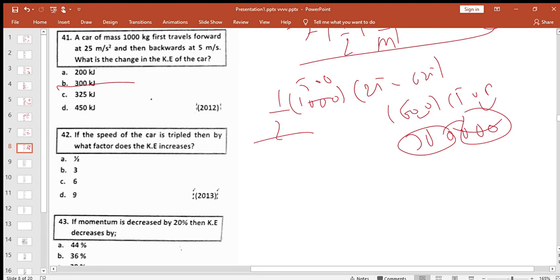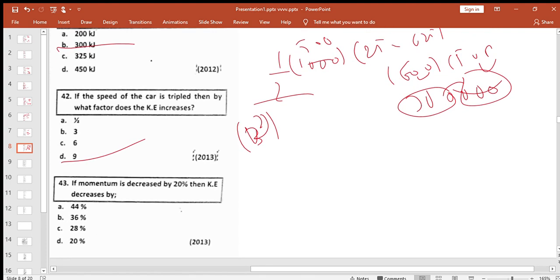Problem 42: If the speed of the car is tripled, then by what factor does kinetic energy increase? If we triple the speed, kinetic energy increases by a factor of 9.